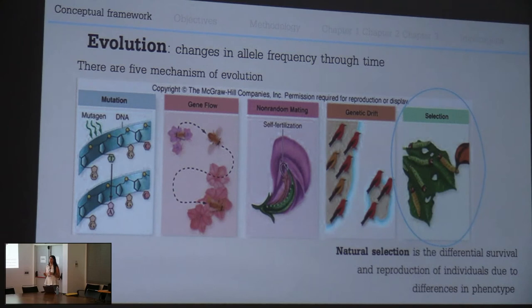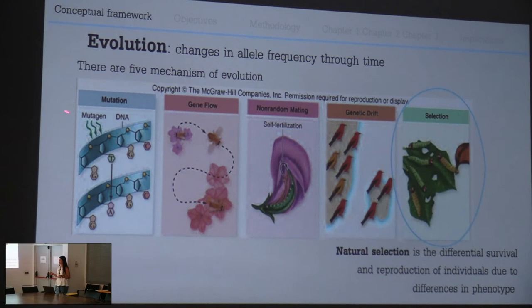What does evolution exactly mean? Evolution is a change in allele frequency through time. There are five principal mechanisms of evolution: mutation, gene flow, non-random mating, genetic drift, and the most important for my thesis - selection. Selection means that a heritable trait causes differential survival and reproduction of individuals carrying that phenotype.